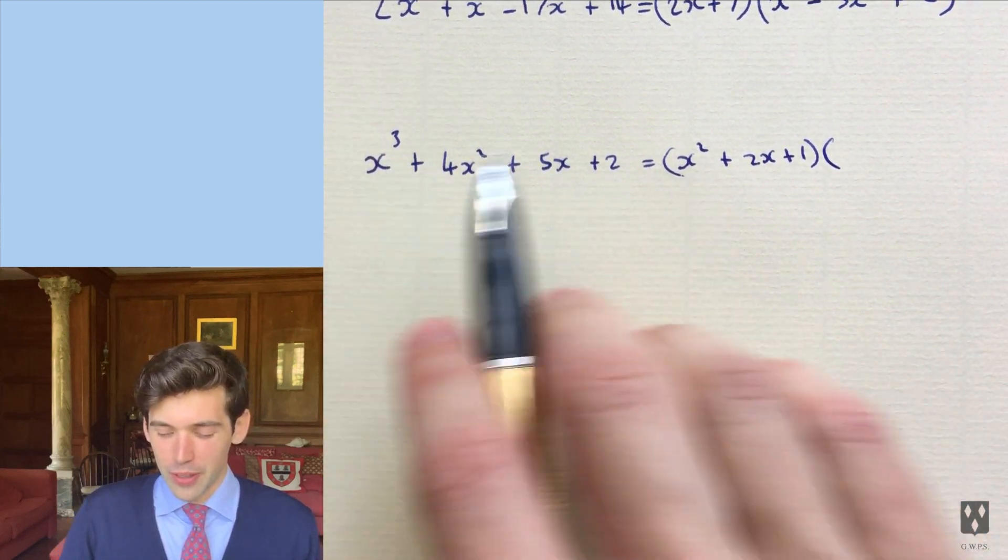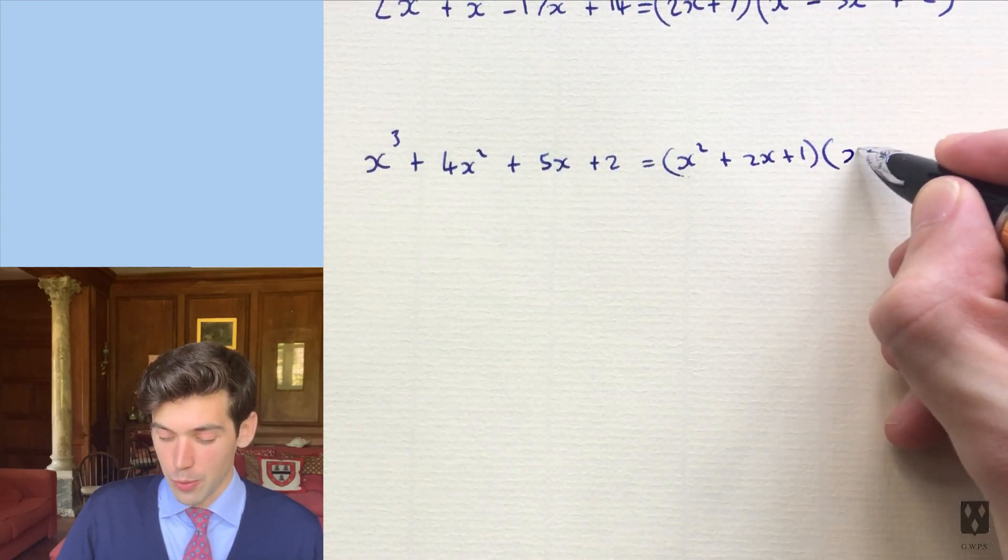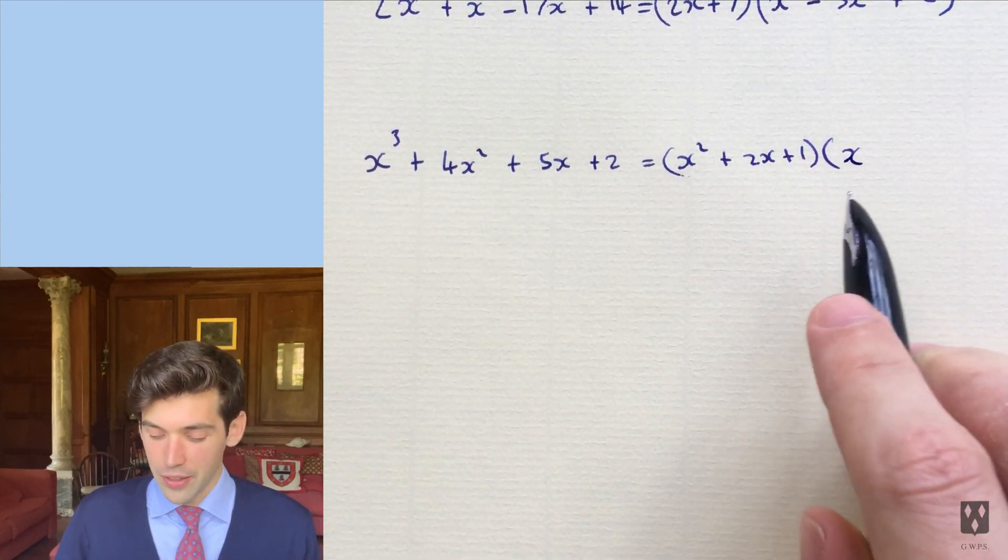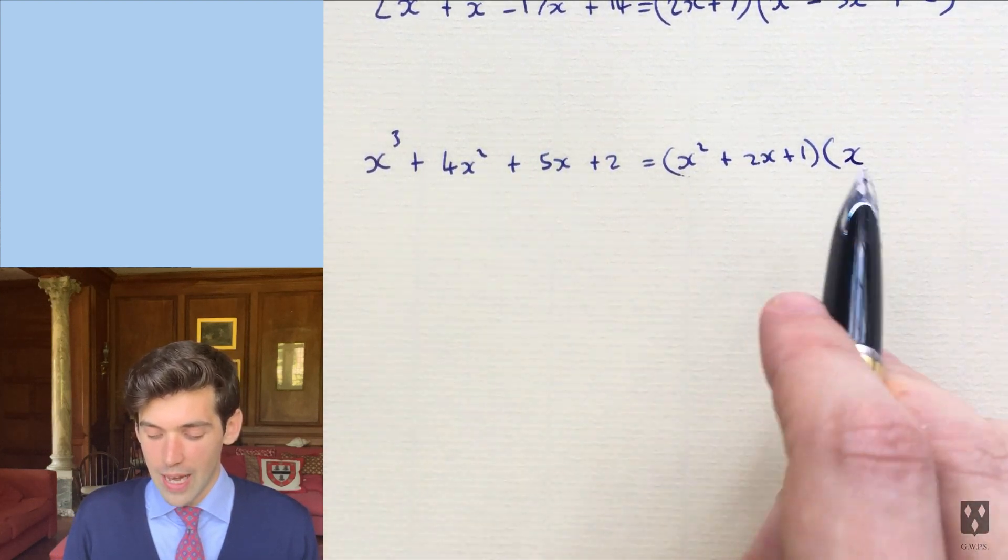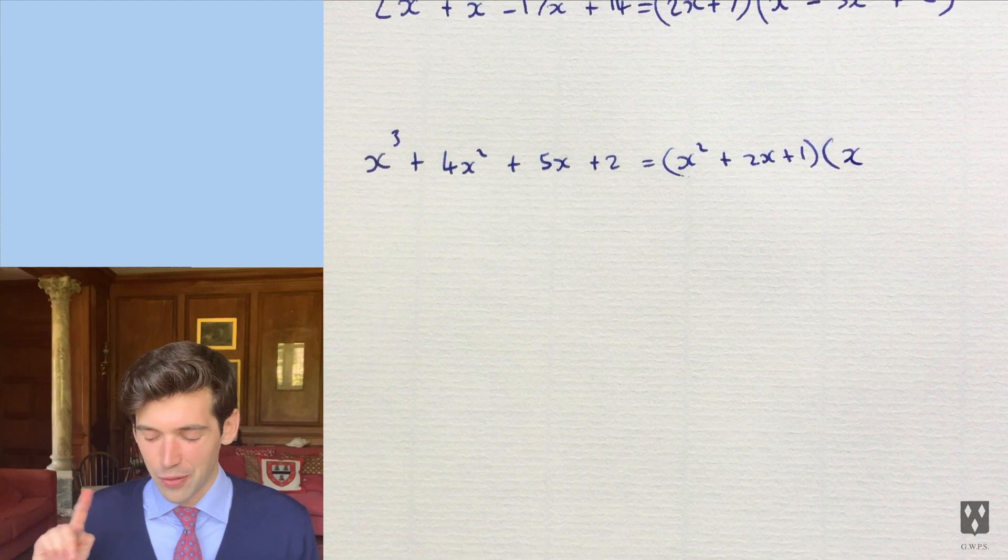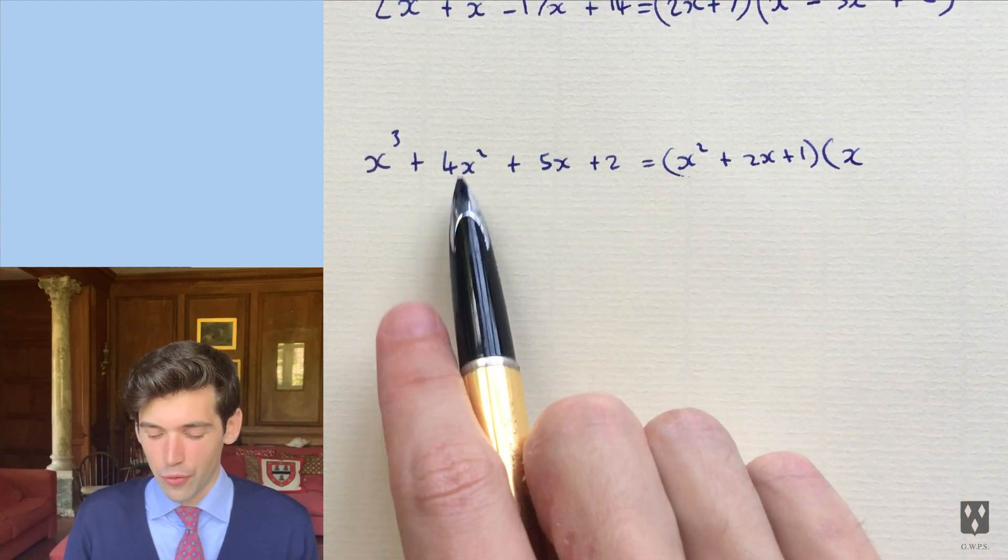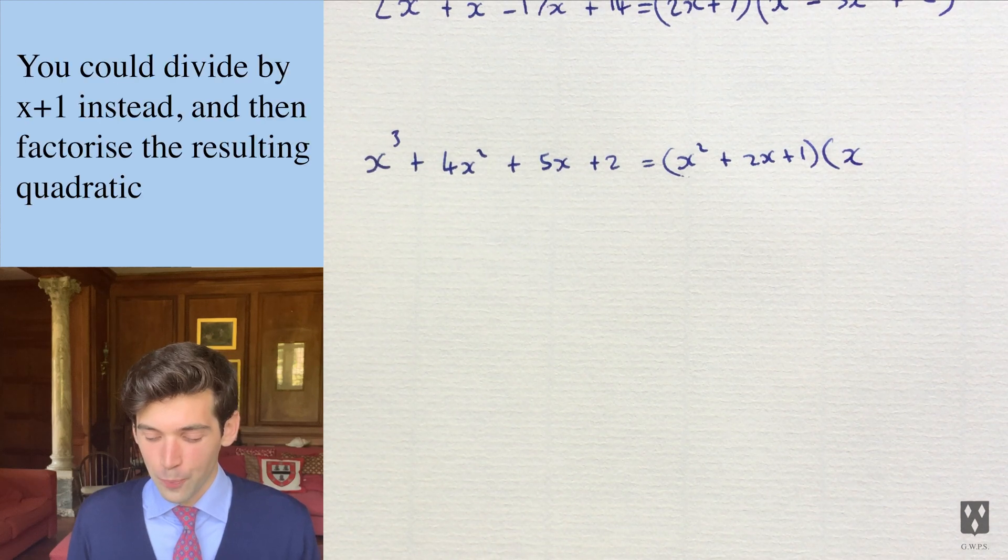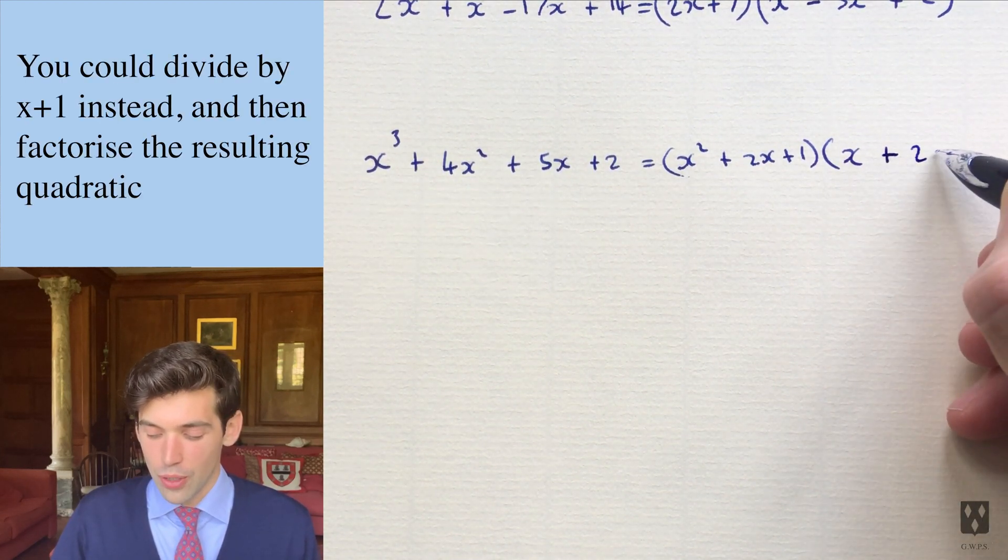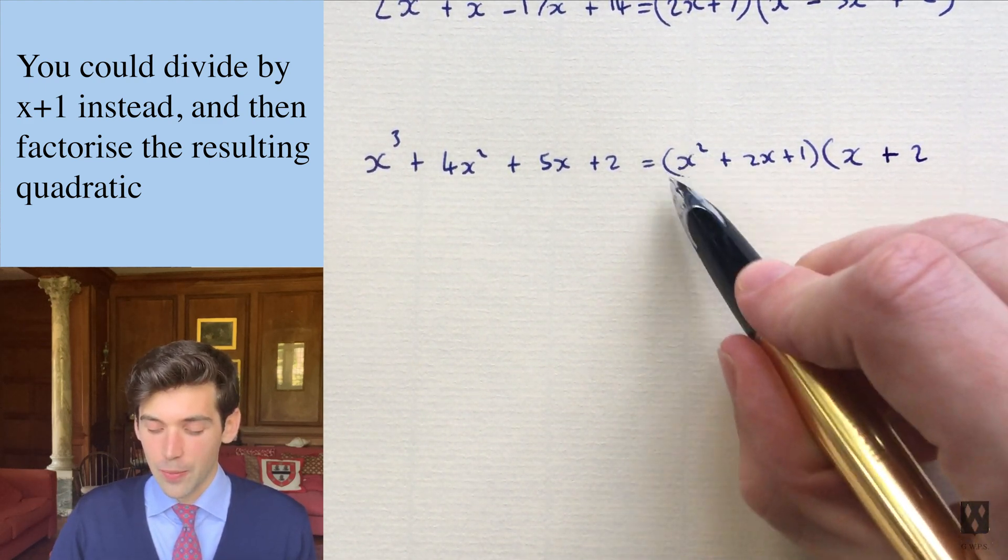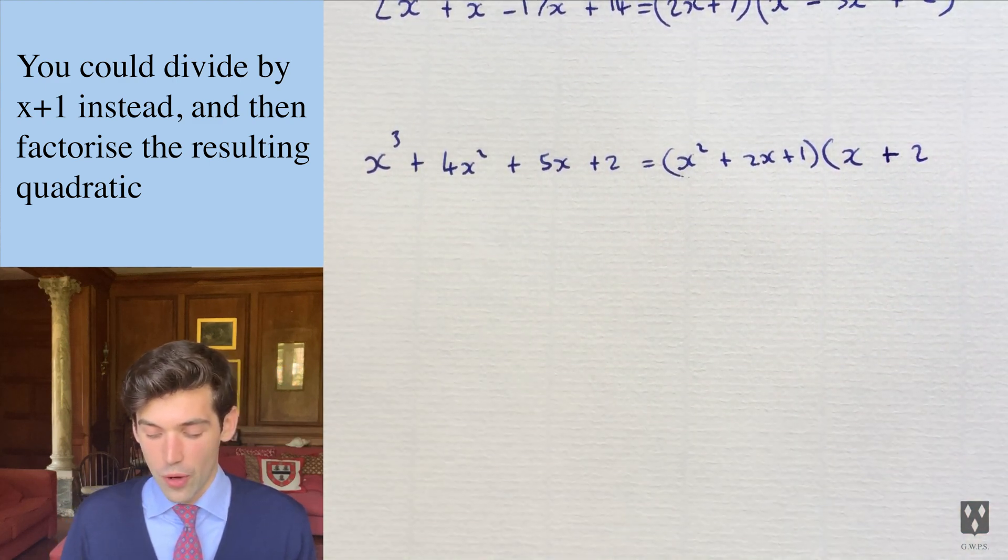So start off with, it's quite an easy first step, x squared to x cubed. So we just put an x down. And now this gives us 2x squared, and also x. So we have to be a bit careful with memorizing everything here. So we've got 2x squared. Now we want 4x squared. So let's add on 2 here, because that makes 2x squared. So we've got 2x squared and 2x squared. That gives us 4x squared.